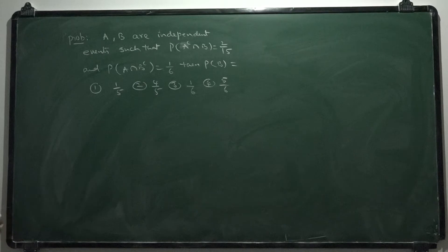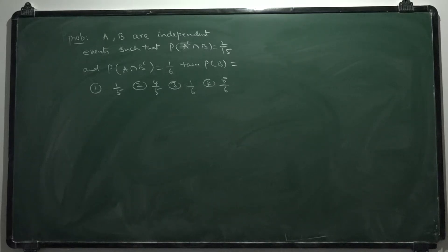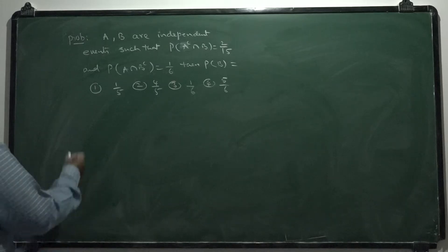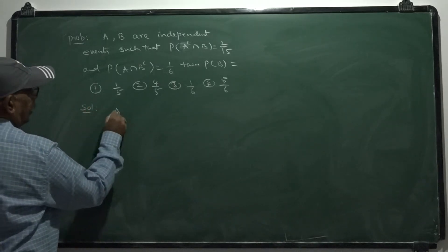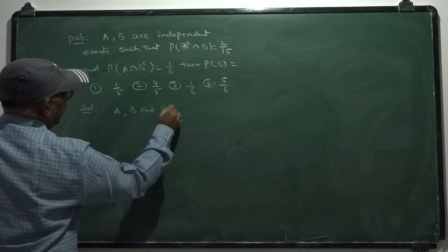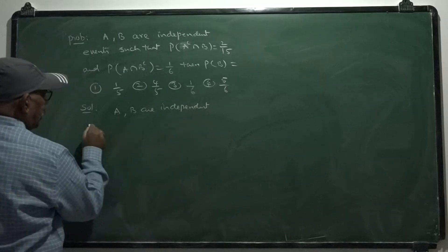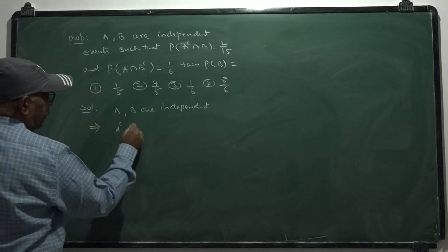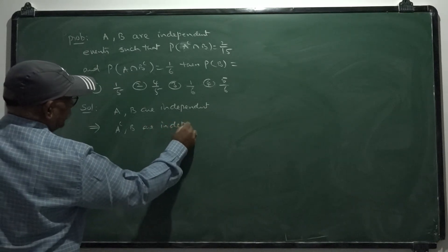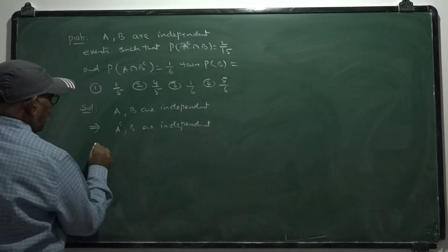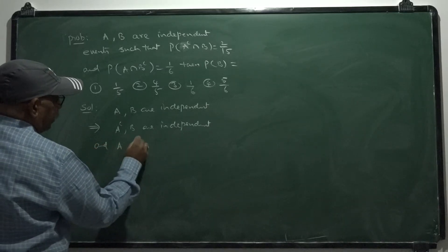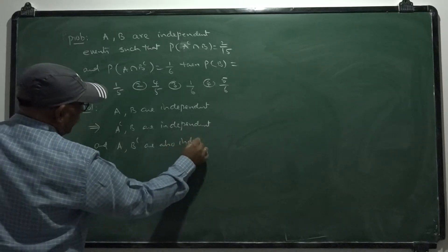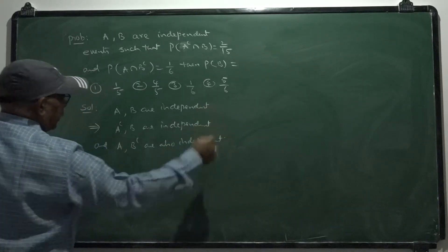A and B are independent events such that probability of A complement intersection B is 2 by 15, and probability of A intersection B complement is 1 by 6. Then find probability of B. Given A and B are independent, that implies A complement and B are independent, and A and B complement are also independent.